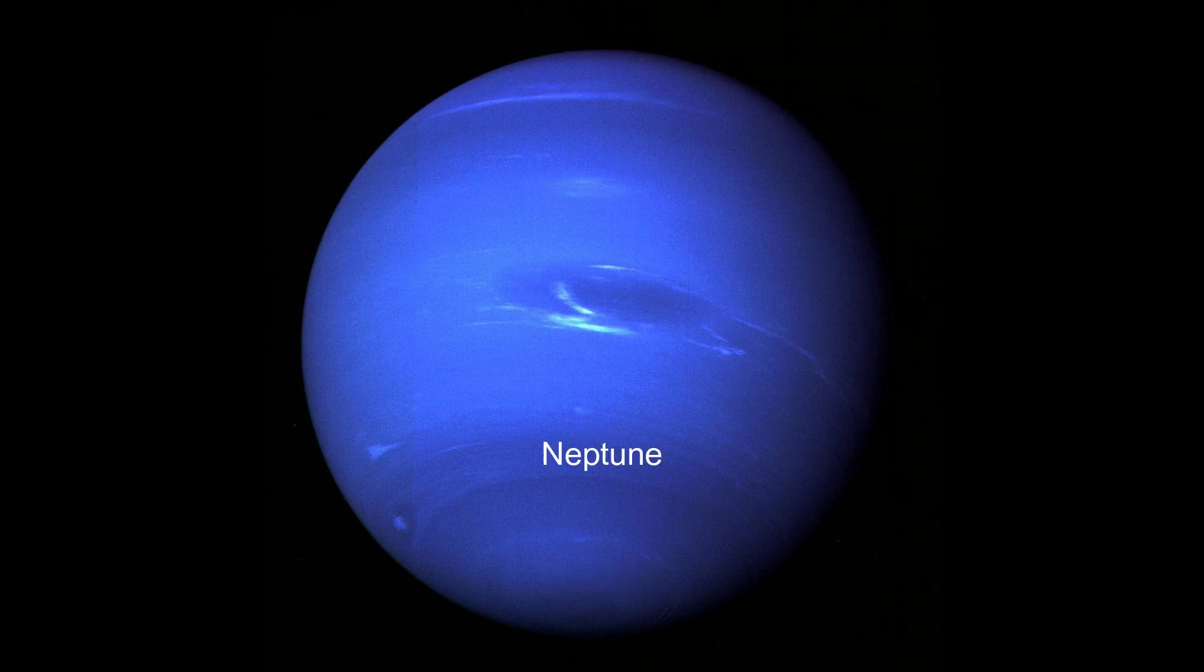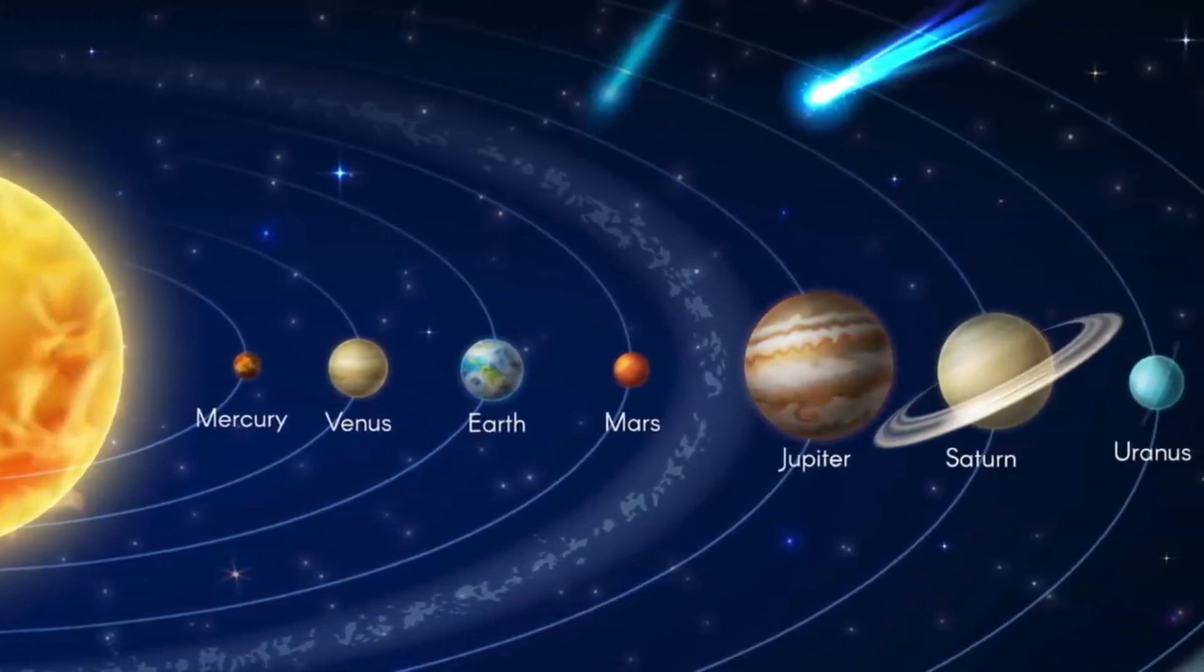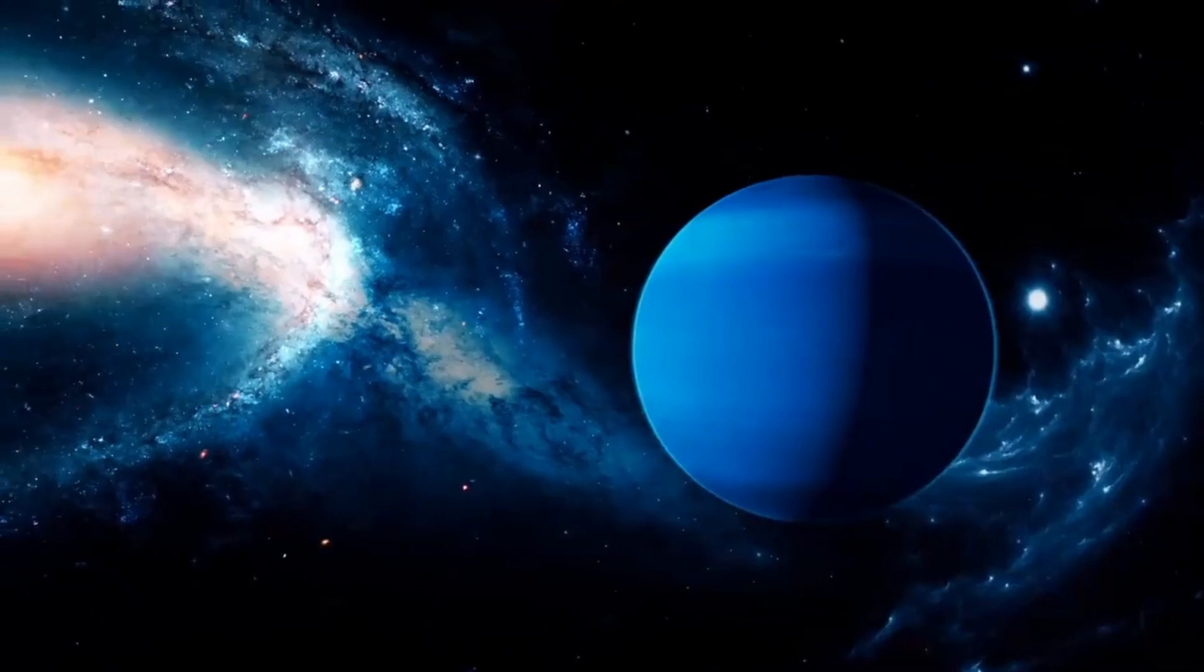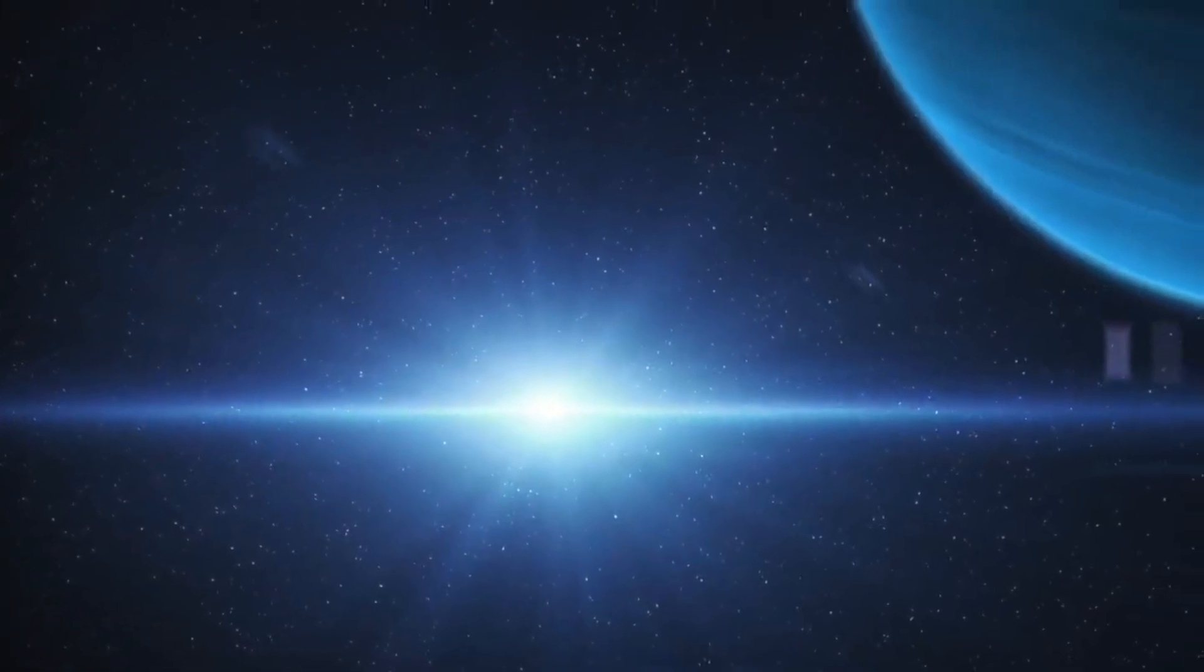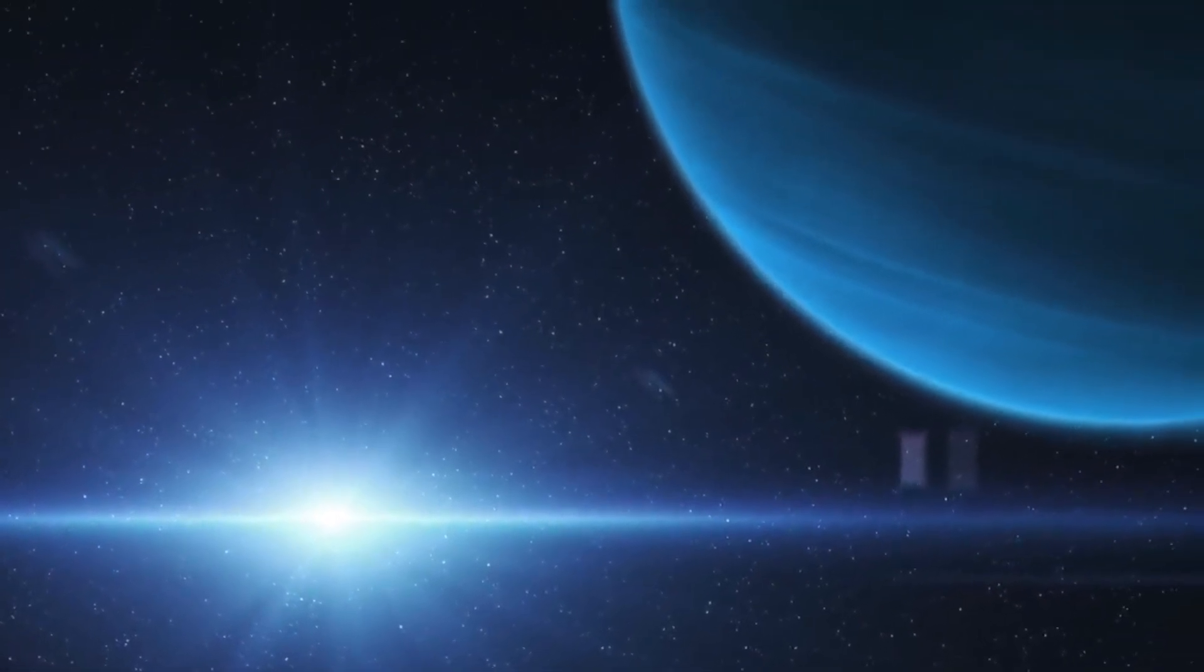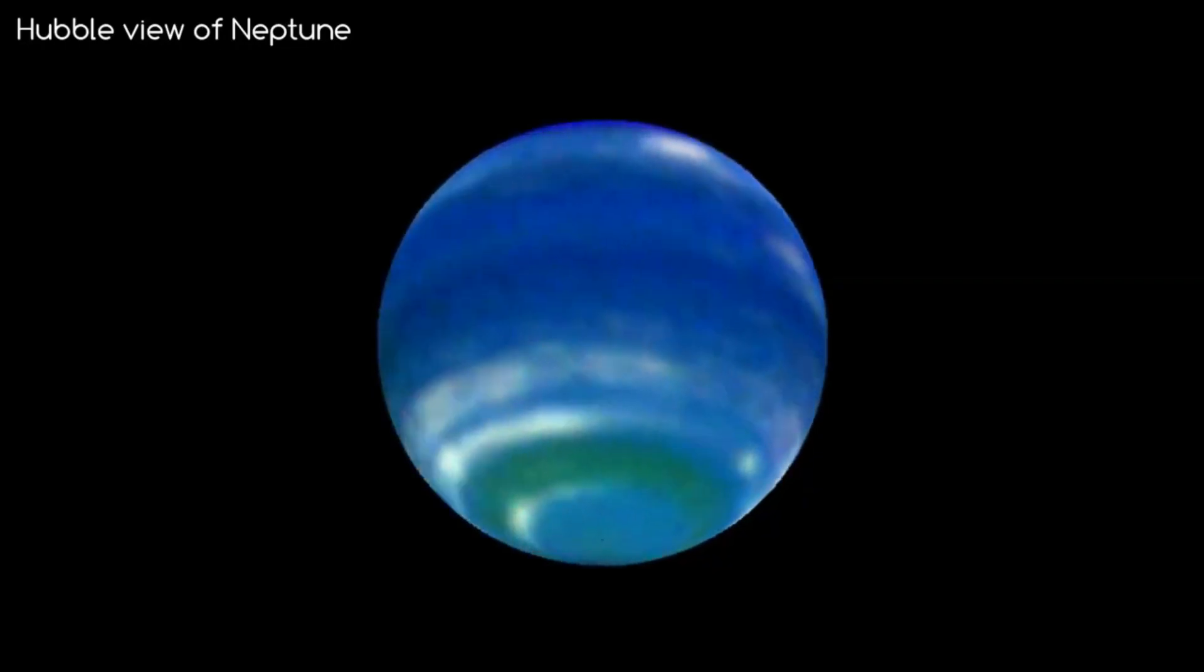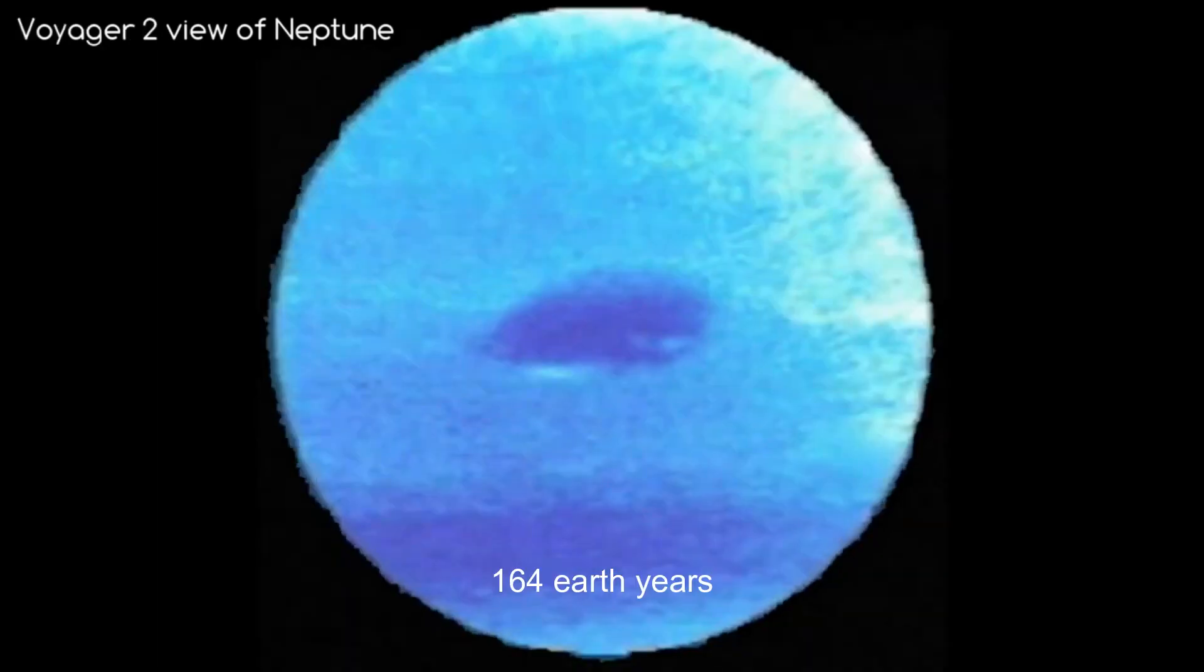Neptune. We have arrived on the last planet of our solar system. Neptune is the farthest planet from the Sun and is also the planet that has the strongest winds in the solar system, reaching 2,000 kilometers per hour. It has a bluish atmosphere composed of methane gases. The rotation of the planet lasts about 16 hours, while its translation is equivalent to 164 Earth years.